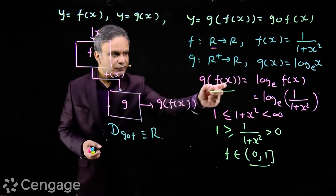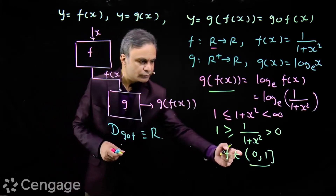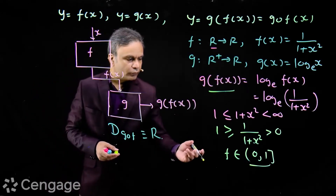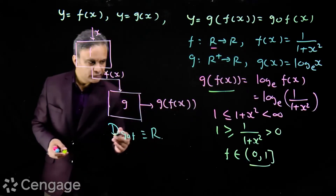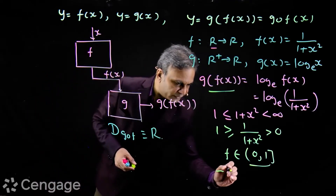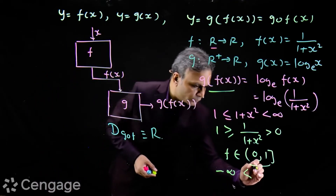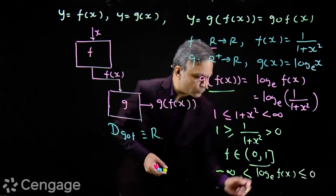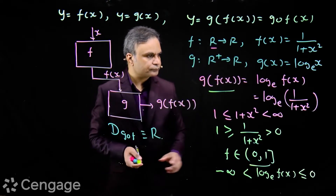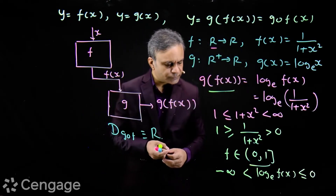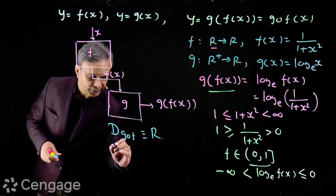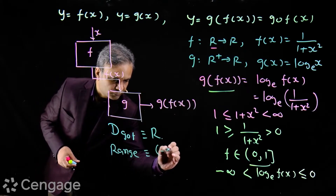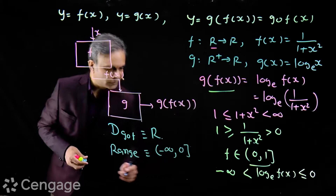Now, what will be the range of this function? Since f(x) belongs to (0, 1], we apply log to this interval. When f(x) approaches 0, its log value will approach minus infinity. So we have −∞ < log(f(x)) ≤ 0. Log 1 = 0, so the range of g(f(x)) is the interval (−∞, 0].